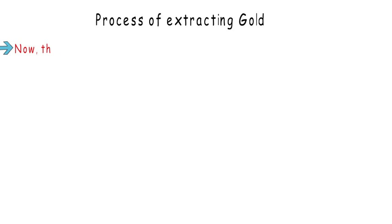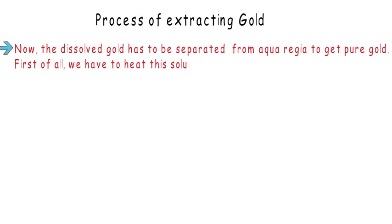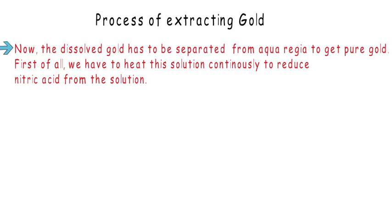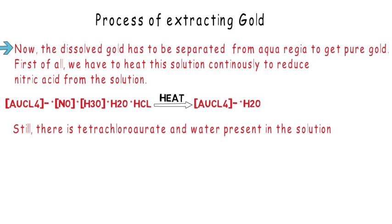How to extract gold from the solution: the dissolved gold has to be separated from aqua regia to get pure gold. First of all, we have to heat the solution continuously to reduce nitric acid from the solution. There is still tetrachloroaurate and water present in the solution, so we react this solution with SO2 (sulfur dioxide, gas).